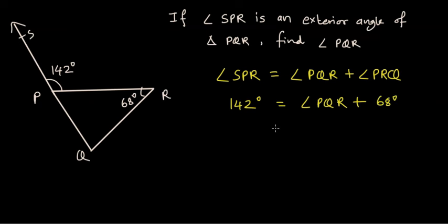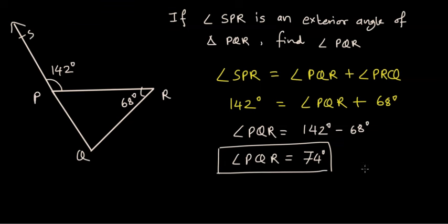Now just rearranging to find angle PQR, we subtract 68 from both sides. We get angle PQR is equal to 142 degrees minus 68 degrees, and that gives us angle PQR is equal to 74 degrees. This is how we can apply exterior angle theorem to solve problems related to the exterior angles and angles inside the triangle.